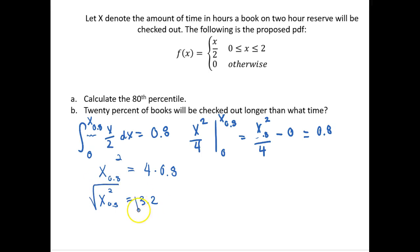Now I need to take the square root of both sides because I want to solve for this value, and this is then equal to x₀.₈ is simply equal to 1.789 hours. So that means that 80% of the books will be checked out for less than 1.789 hours.